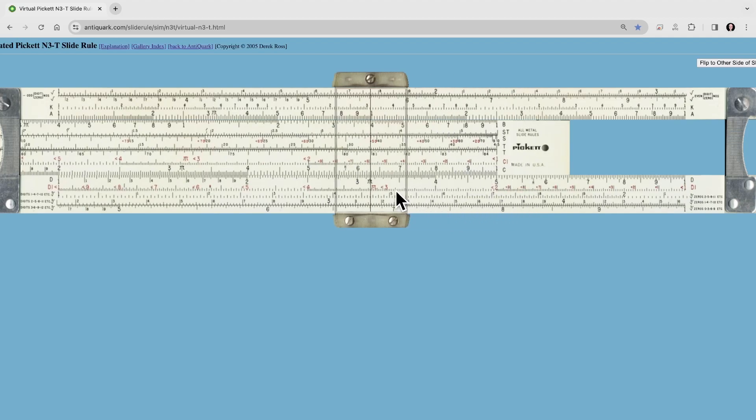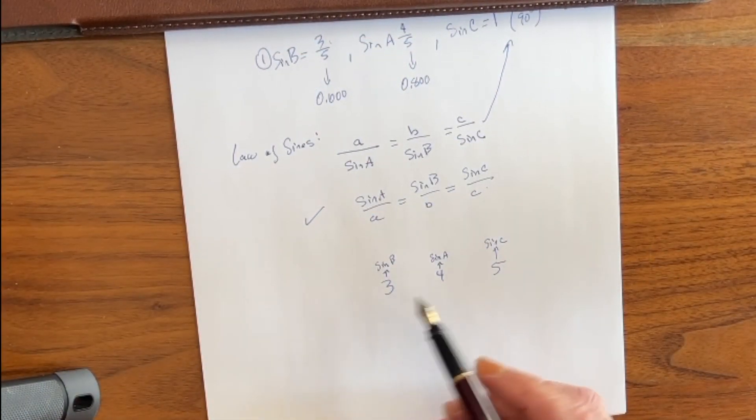Now all we have to do is go over here to the 3, and we read the sine of angle B directly above it, which is 0.6. Likewise, we can come here to the 4 and read the sine of angle A directly above it, which is 0.8.